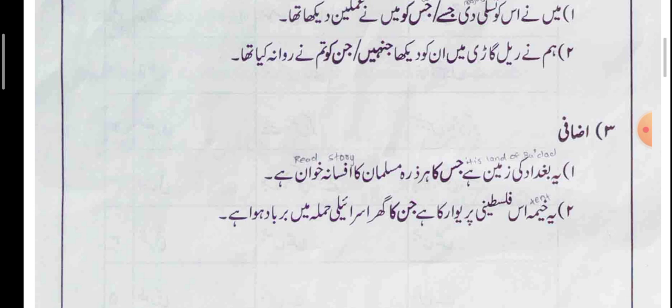Second example of اضافی condition: یہ خیمہ اس فلسطینی خاندان کا ہے جن کا گھر اسرائیلی حملے میں برباد ہو گیا — The tent belongs to that Palestinian family whose house was destroyed in the Israeli attack. Note: in English there is only one word 'whose' for both singular and plural, but in Urdu جس کا is for singular and جن کا is for plural in the اضافی condition.